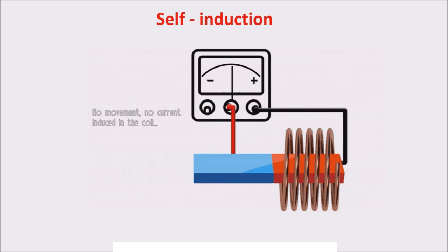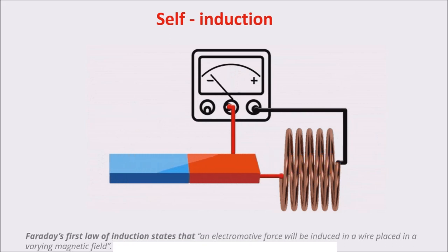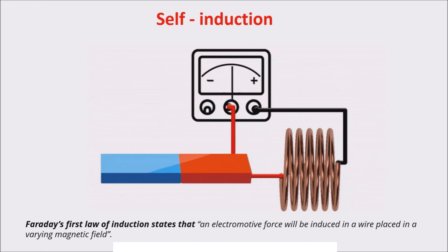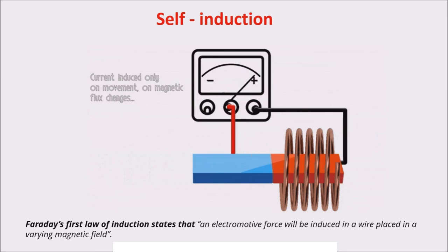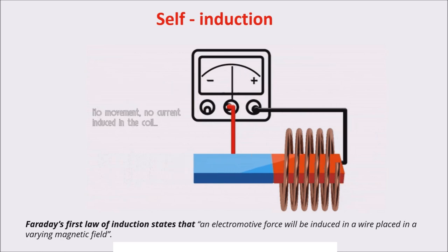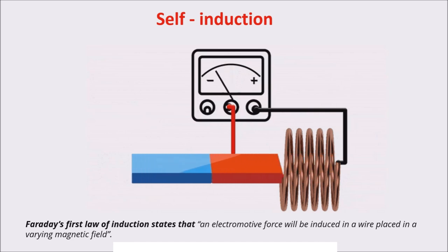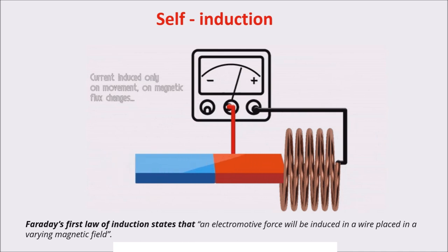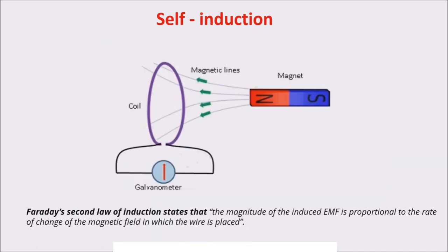With a similar experiment, Faraday realized his first law: an electromotive force will be induced in a wire placed in a varying magnetic field. This electromotive force is a voltage applied on the conductor which creates the current we measure. The varying magnetic field is generated by the moving of the magnet. Faraday's second law states that the magnitude of the EMF is proportional to the rate of change of the magnetic field in which the wire is placed. What actually changes is the magnetic flux.